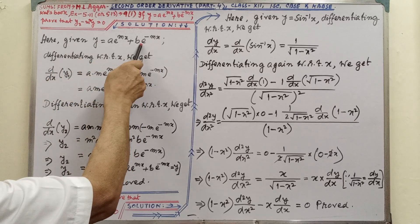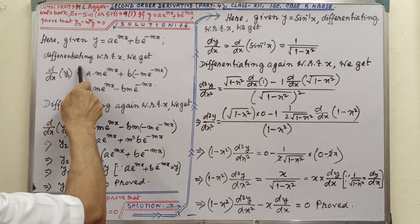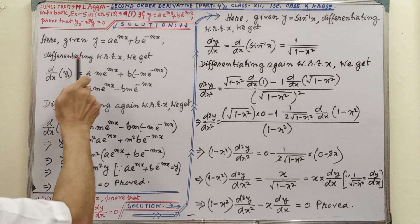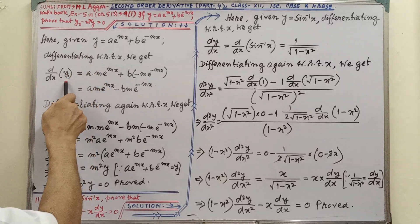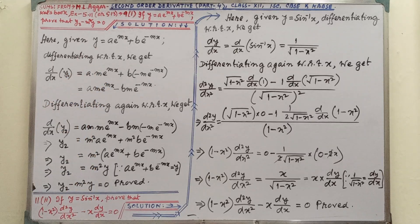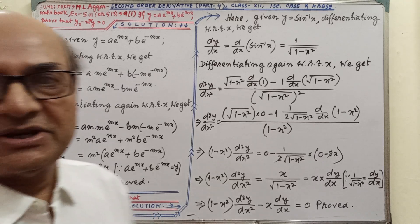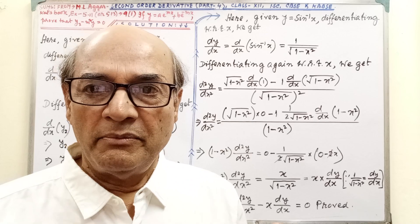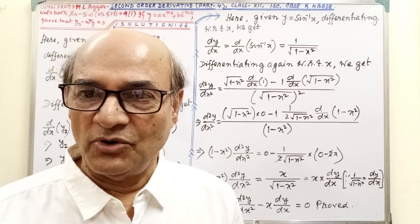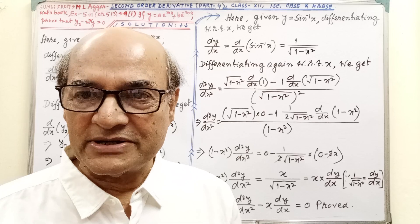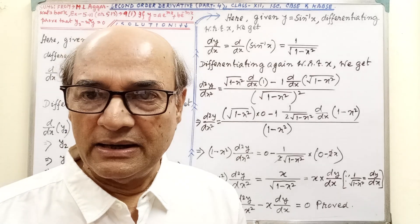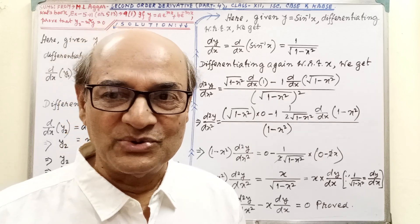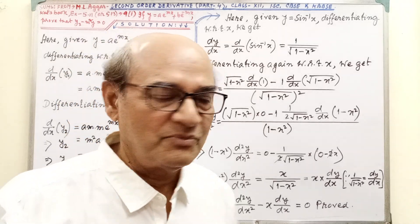Here, y is given equal to ae^(mx) + be^(-mx). After writing this, differentiating with respect to x we get the first derivative. The symbol for the first order derivative is y1 — that is dy/dx — and d²y/dx² is the second order. f' is the first order, f'' is the second order, and similarly y1 is first order and y2 is second order. You must remember those symbols.